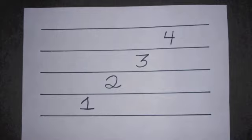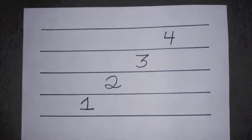The space between each line can also be labeled with numbers. The bottom space is 1 and is followed by 2, 3, and 4 as you move up the staff.